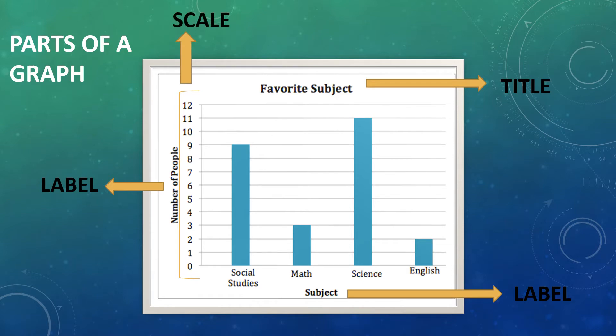Next, we have scale. You can see numbers from 0 to 12 on the y-axis. These numbers have an interval of 1. Therefore, the numbers are 0, 1, 2, 3, 4, and so on.